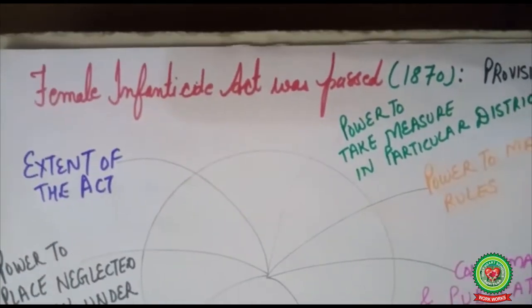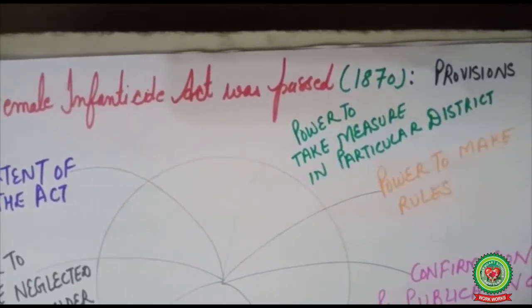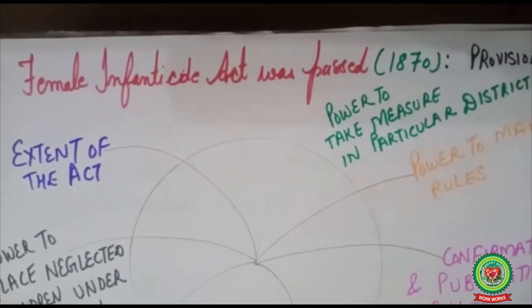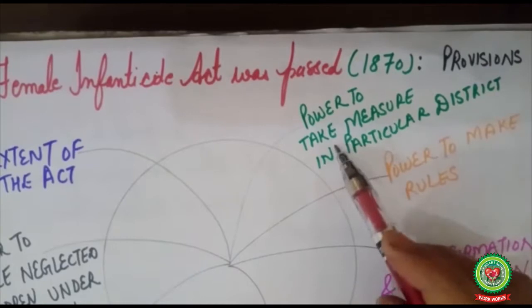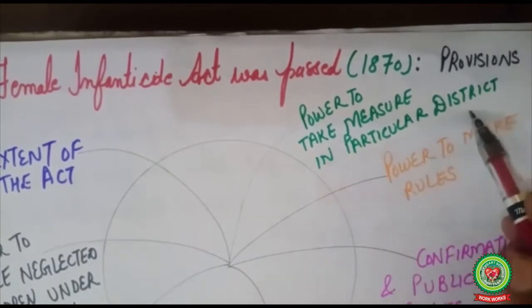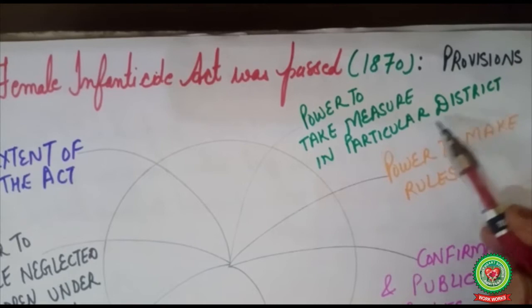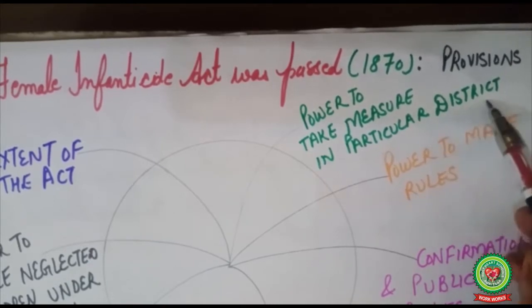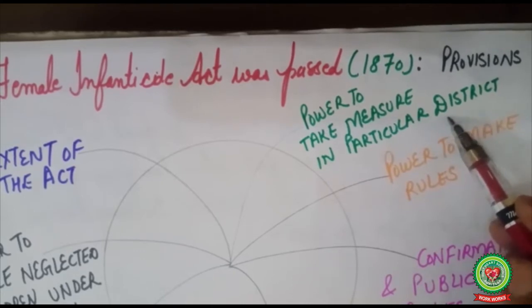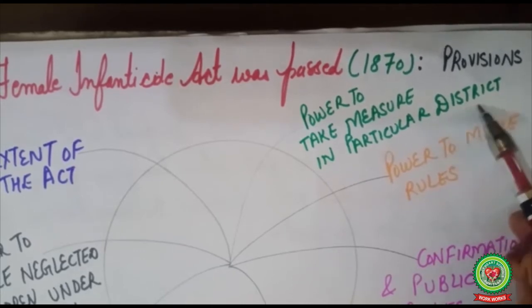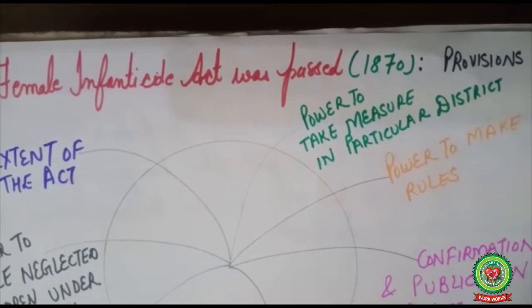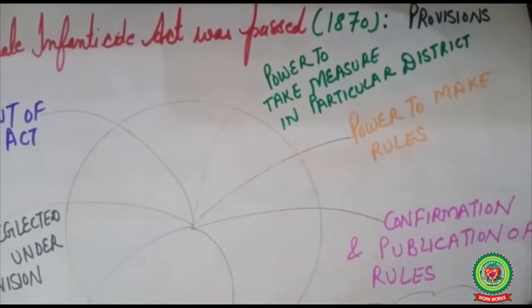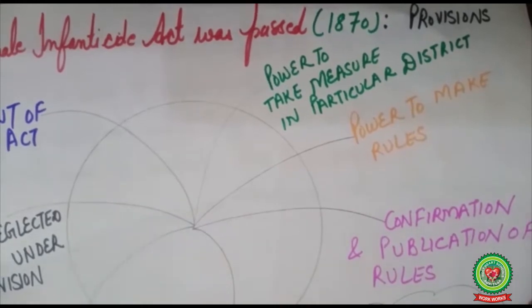The Female Infanticide Act was passed in 1870. The first provision was that the power to take measures in particular districts was given to the British government. If they found that in any state the problem of female infanticide was severe, they had the power to take action in those particular districts. The second provision was the power to make rules to end female infanticide.